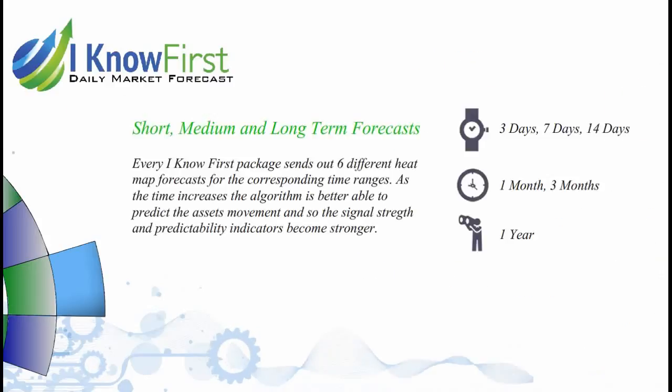Every I Know First package sends out six different heatmap forecasts for the corresponding time ranges. As the time increases, the algorithm is better able to predict the asset's movement, and so the signal strength and predictability indicators become stronger.